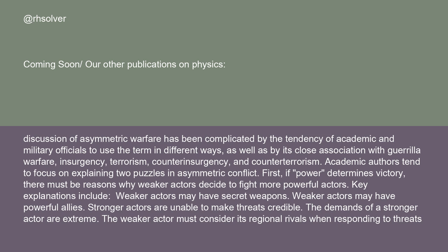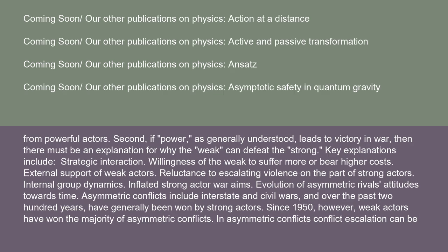Academic authors tend to focus on explaining two puzzles in asymmetric conflict. First, if power determines victory, there must be reasons why weaker actors decide to fight more powerful actors. Key explanations include: weaker actors may have secret weapons; weaker actors may have powerful allies; stronger actors are unable to make threats credible; the demands of a stronger actor are extreme; and the weaker actor must consider its regional rivals when responding to threats from powerful actors.